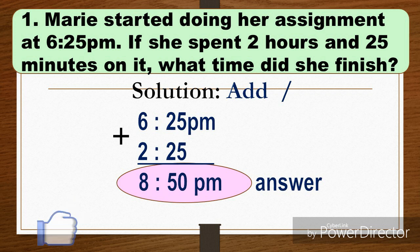...what time did she finish? Okay, so our solution here is to add. We're going to add 6 hours and 25 minutes to 2 hours and 25 minutes. 25 plus 25 is 50, and 6 plus 2 is equal to 8. Therefore, we have 8:50 PM. So she'll finish at 8:50 PM.